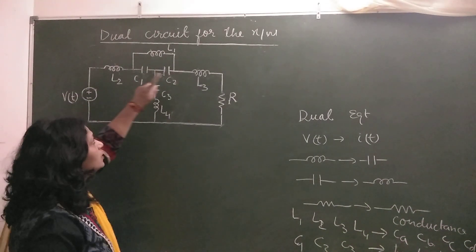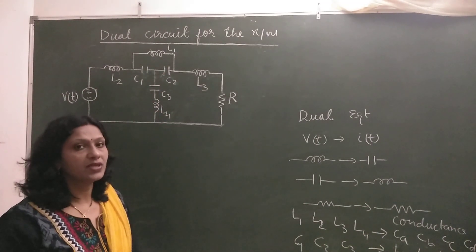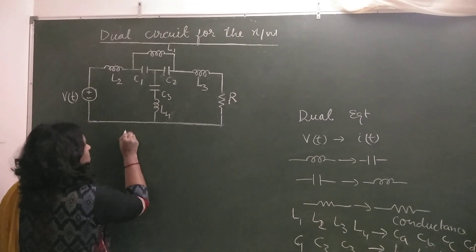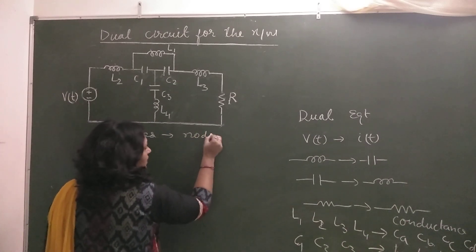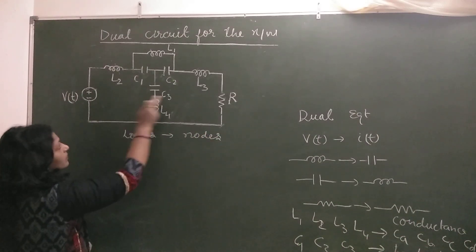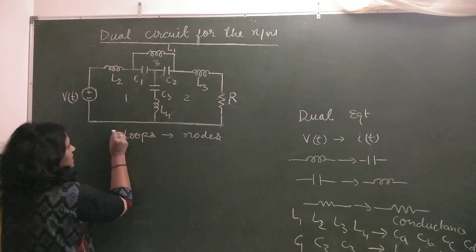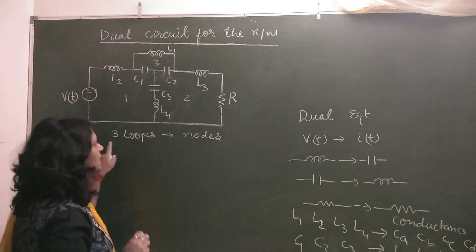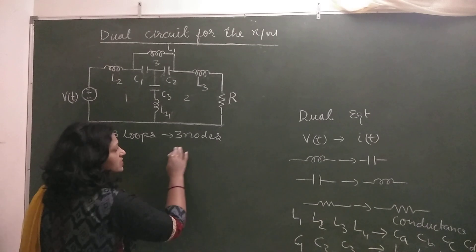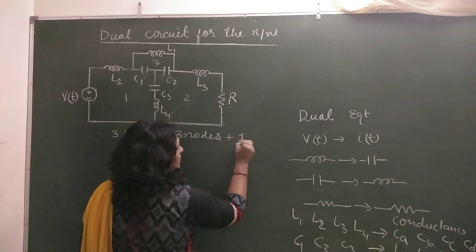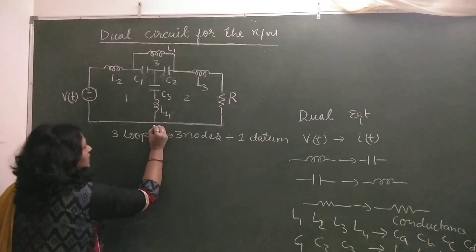To draw the dual circuit, first we have to count the number of loops in the circuit. The number of loops represents the number of nodes in our dual circuit. Here there are 3 loops, so 3 nodes will be present in our dual circuit, plus 1 reference node called the datum node.